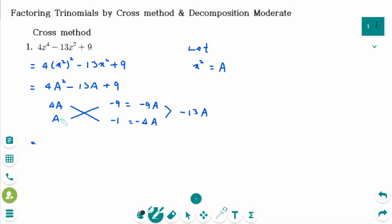So the factor is 4A minus 9 and A minus 1. Then back to original, A was x squared. So 4x squared minus 9 and x squared minus 1.